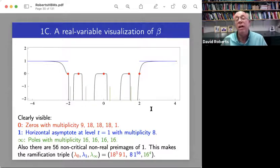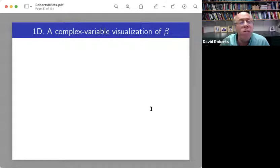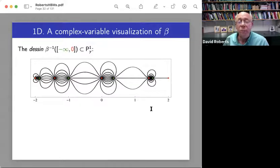All right, that real variable visualization was a little bit just for fun. It's much more meaningful in Belyi maps to look at complex variable visualizations. And the way you do this is you pick an interval downstairs.